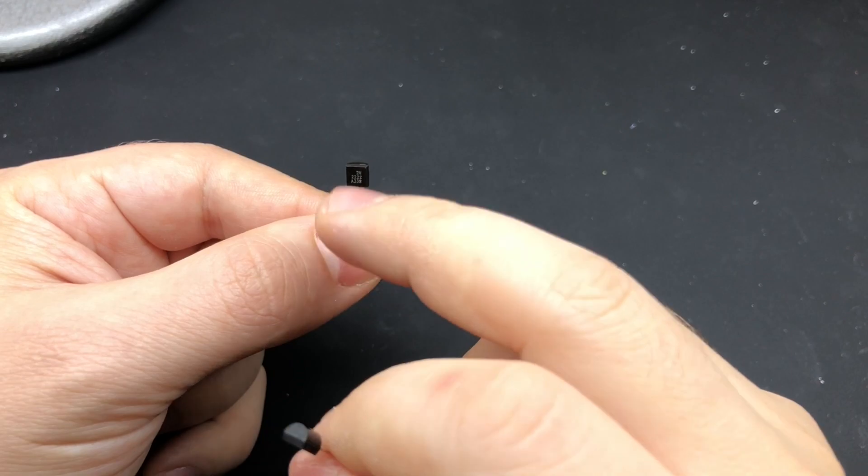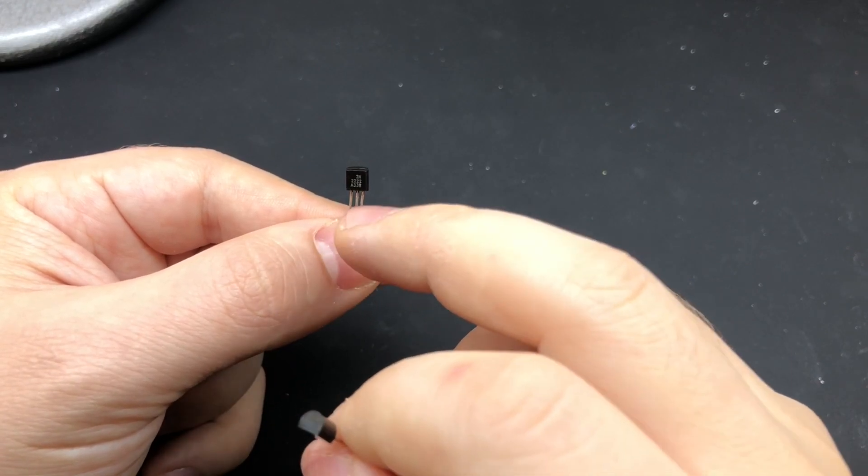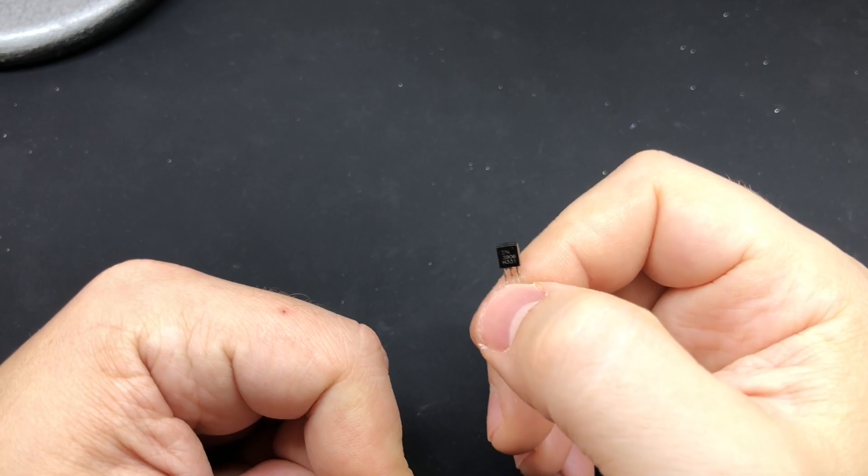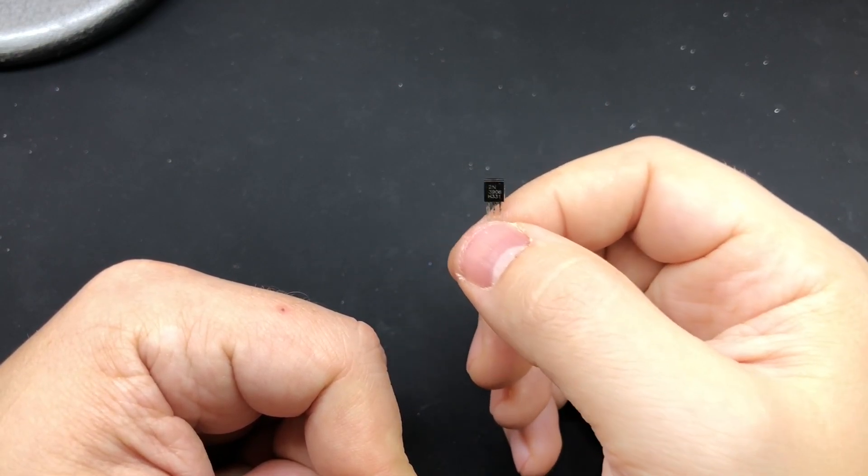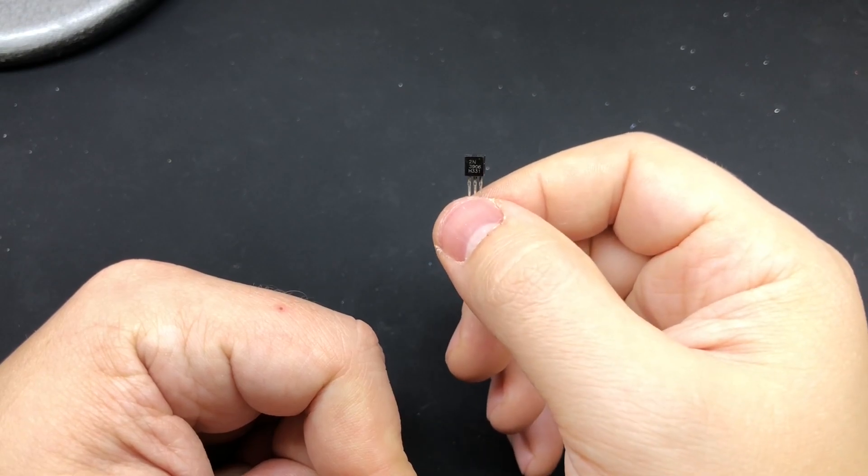For the NPN one, the base pin you connect to a positive voltage and the outer ones will be connected to our ground wire. And for the PNP it's the opposite. The middle pin we're going to connect to ground, which will allow current to flow through the outer pins.